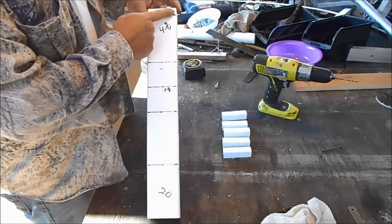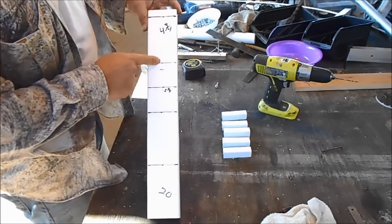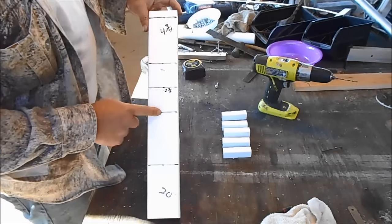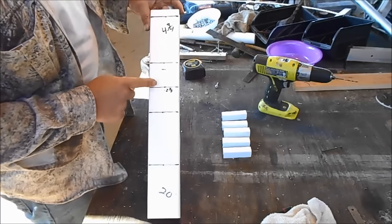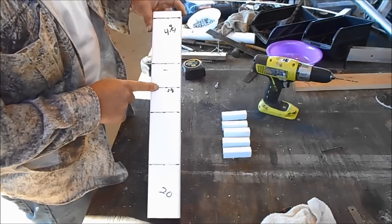Start at the top, make your mark, come down four and three quarters. Make four like that and then this one goes in between these two, which is two and three eighths.